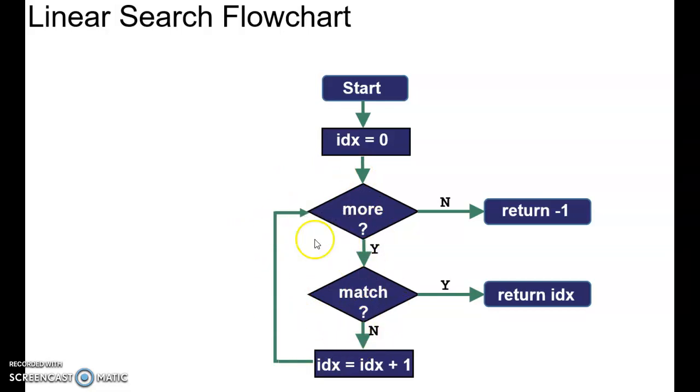If you don't find the match and you never find the match, you're going to finish up with no more things to compare against and you're going to return minus one. But if you do find the match, you're going to return the index position of where you found the match.